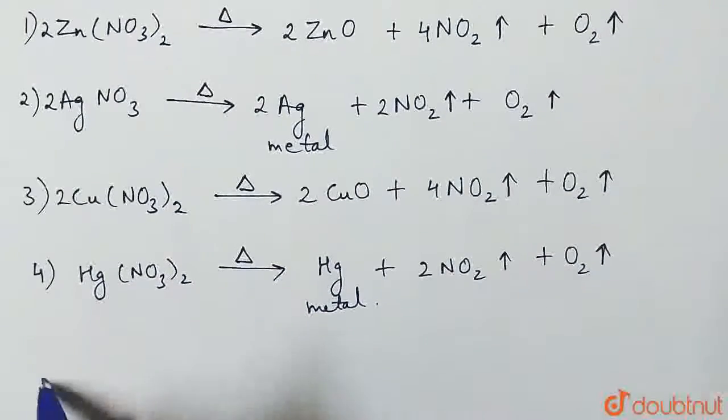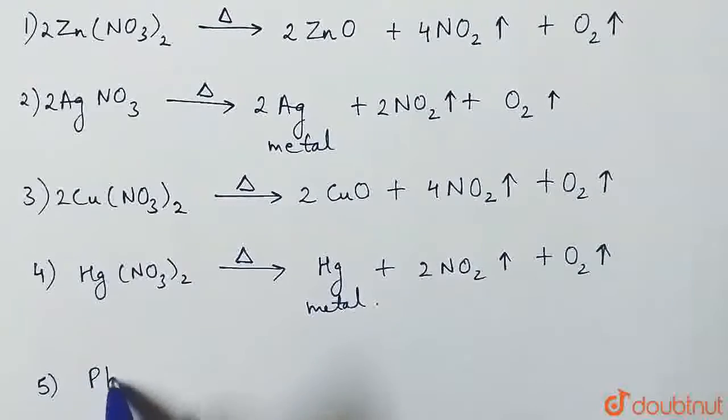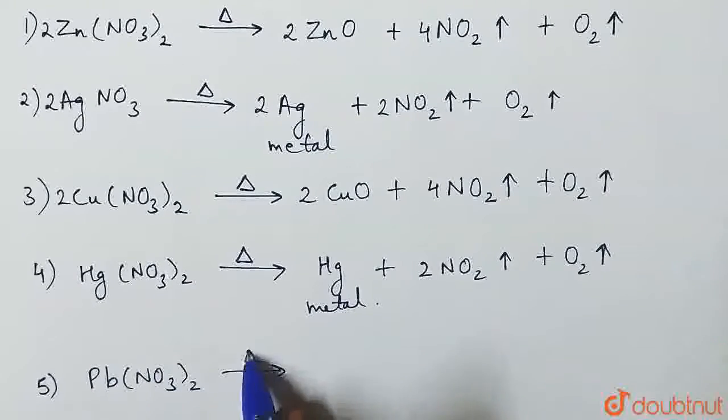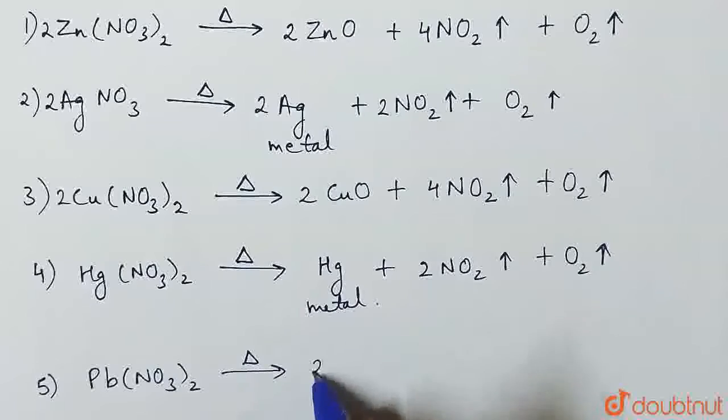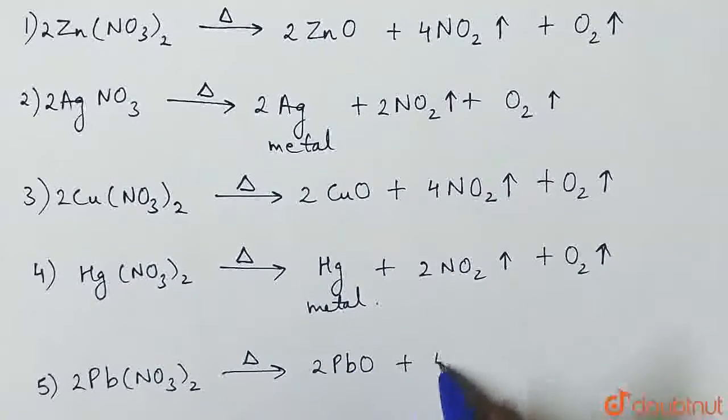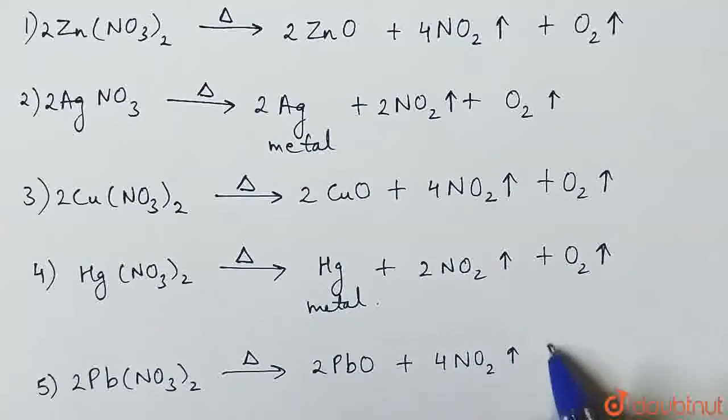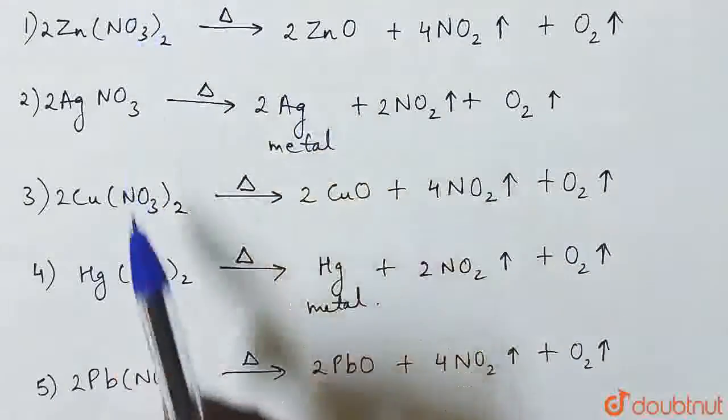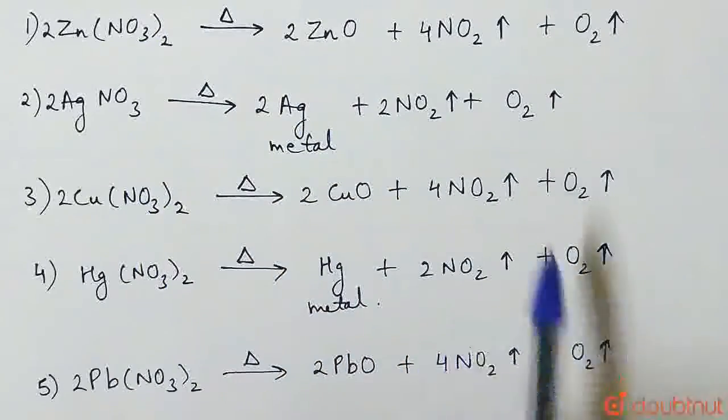Next is lead nitrate, Pb(NO3)2. Lead nitrate thermal heat here form lead oxide, nitrogen and oxygen gas. Here we have metal.